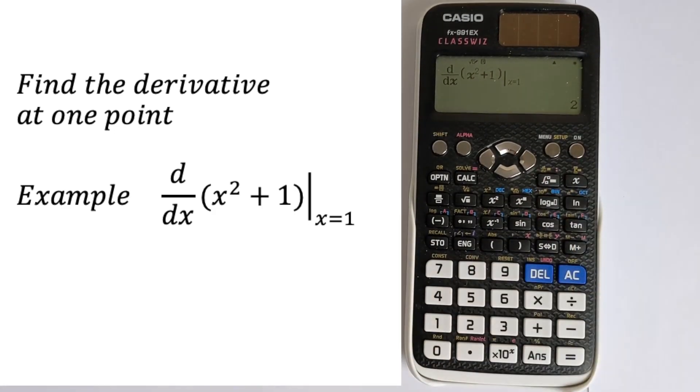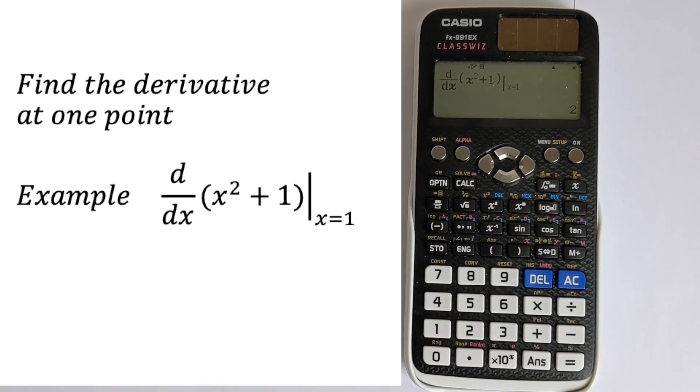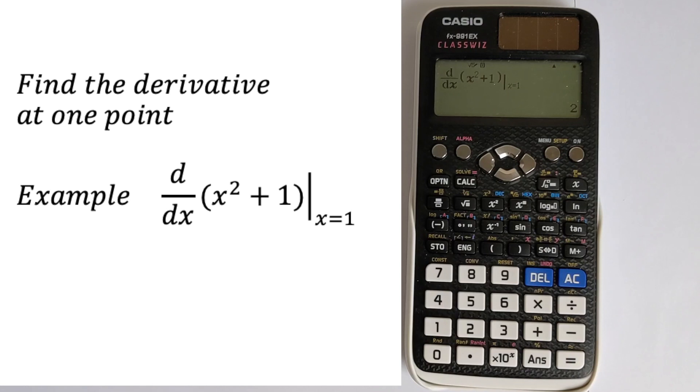And of course, it gives you the value 2 because, clearly, the derivative of this is 2x, and then you substitute x equals 1, you get the value of 2. This is quite useful for finding one derivative at a point. So if you're investigating stationary points, for example, that might be quite useful.